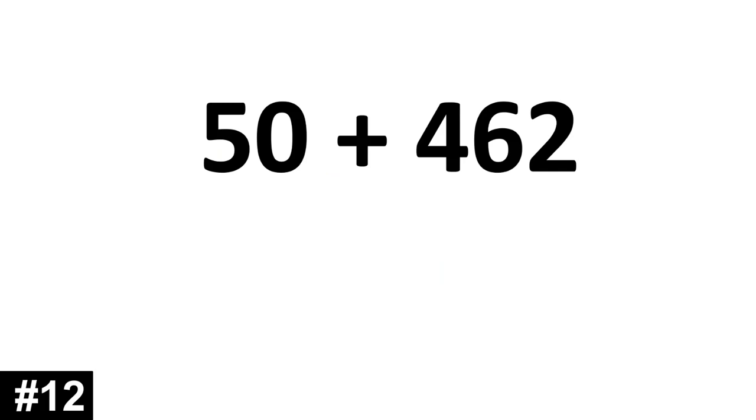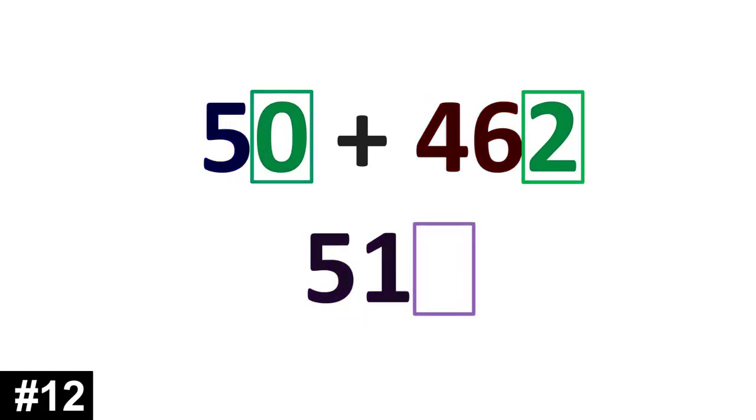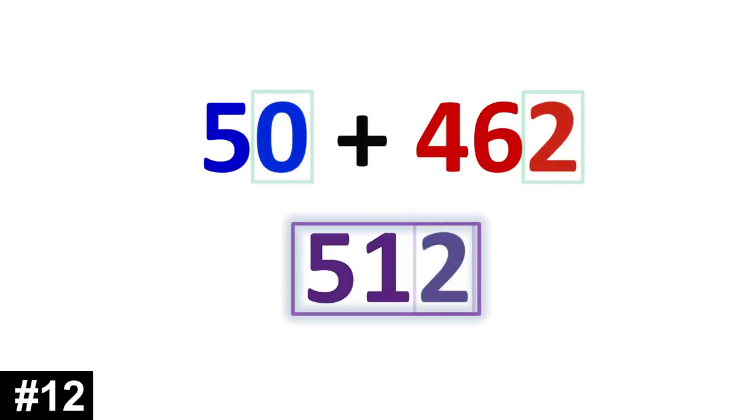How about 50 plus 462? 50 has 5 tens that we add to the 46 tens of 462. 5 plus 46 is 51. Look to the ones. 0 and 2 gives us 2. 512.